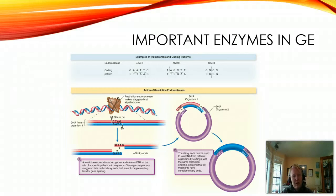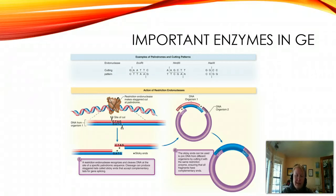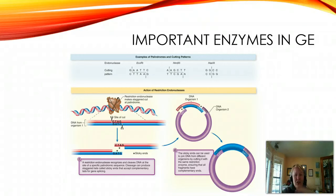So really, when it comes to these restriction enzymes, the big thing I want you to understand is that they cut the DNA in a specific place using a palindrome, and by selecting which one we use, we can either cut DNA into a whole bunch of little fragments for analysis or be able to add genes to plasmids, whatever our application process is.